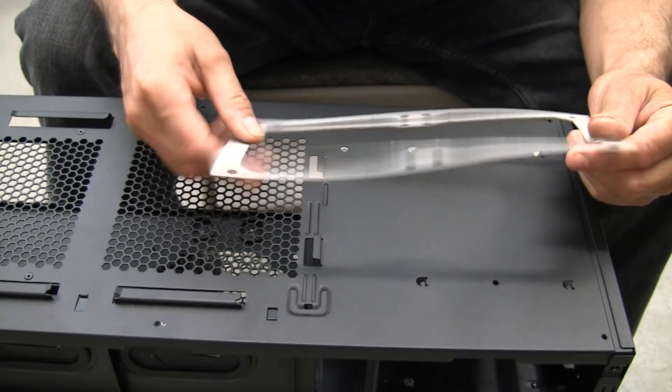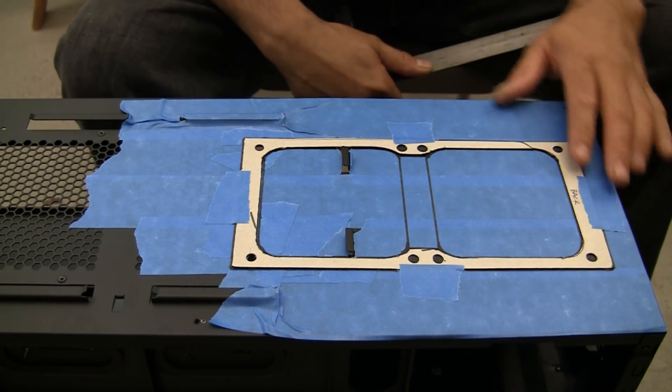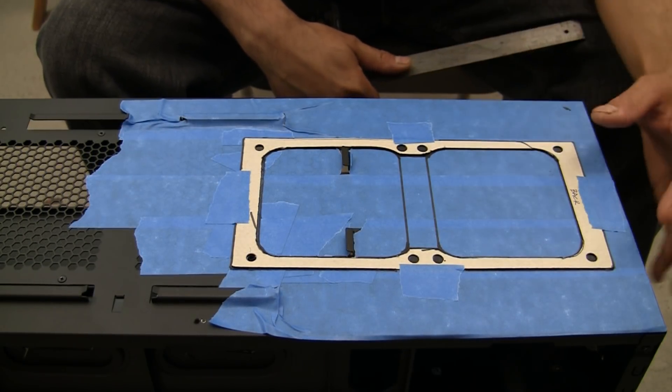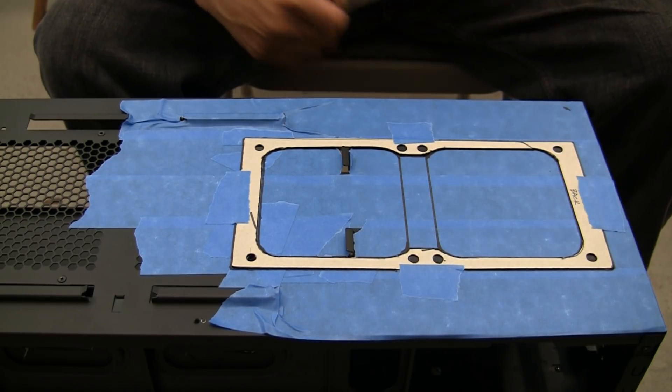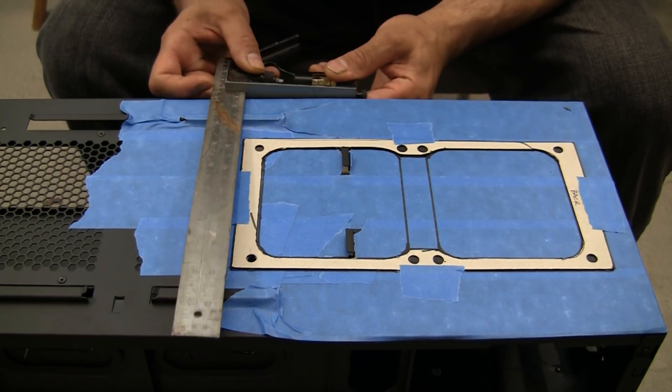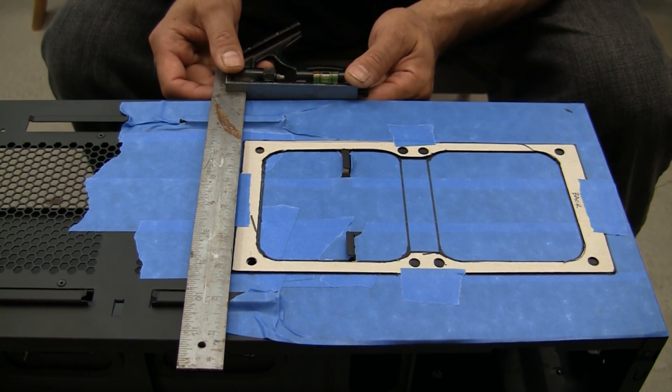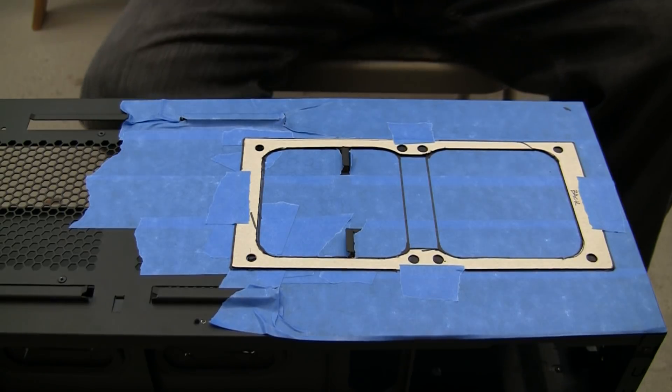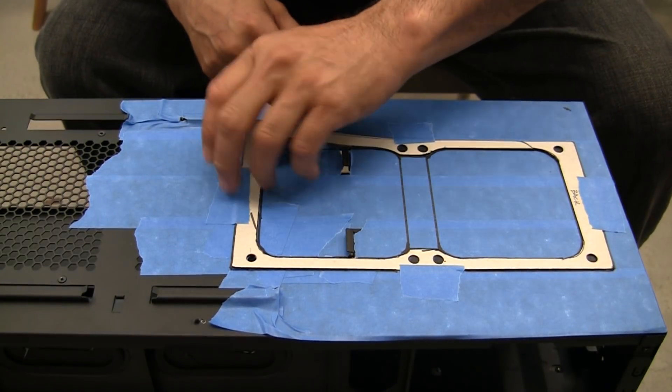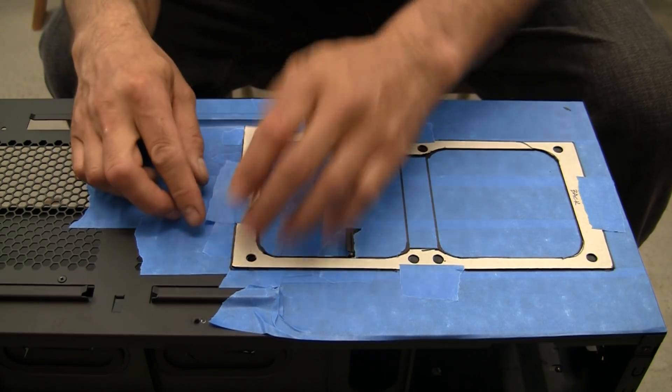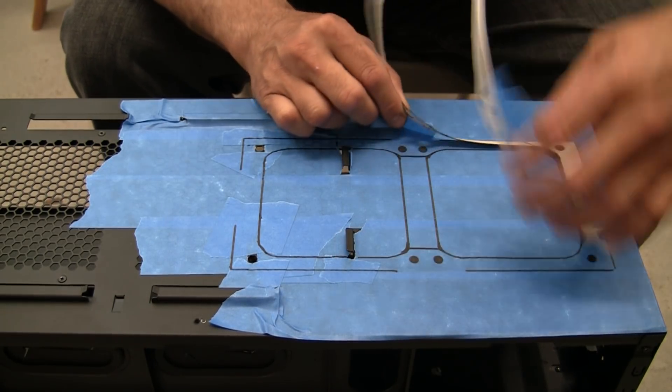As you can see, I went ahead and got the template squared up on the bottom of the case. I went ahead and taped it down so it didn't move. It's not critical, but you may want to get a square and double check to make sure you have that on square. My plan was—let's go ahead and remove this real quick—what I did is I traced the outside of it, more just for a reference.